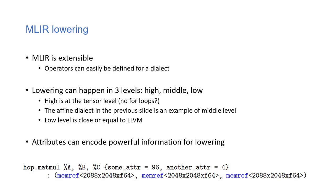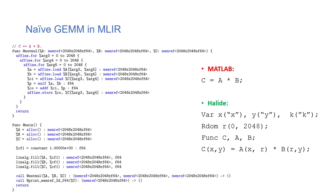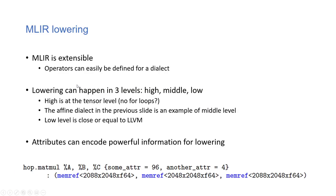At the high level, you have the tensor algorithm without for-loops — just the matrix multiplication operation with some attributes, inputs, and outputs, but no implementation. When you lower to the middle level using the affine dialect, you get the nested for-loop implementation. Then finally you go to LLVM where you get the executable. The parameters and optimization passes can generate an optimized nested for-loop, which is the purpose of this paper.